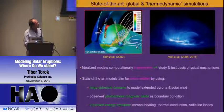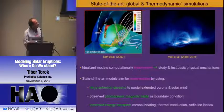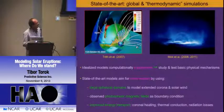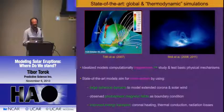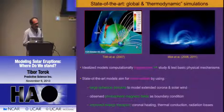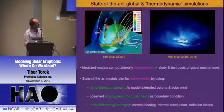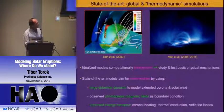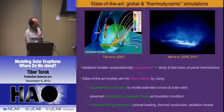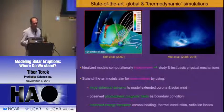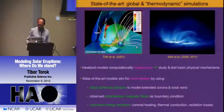Here's an example from a simulation done by Lionello and collaborators. This is on an active region scale—a synthetic EIT 171 image. If you put in all this physics, you really start to see loops and similar structures in your simulations.